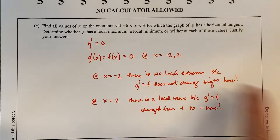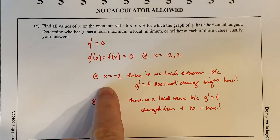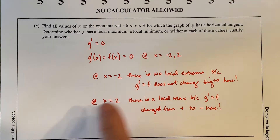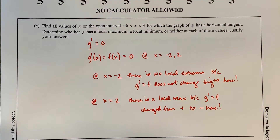At x = 2, the values of F went from plus to zero to minus — the derivative of G went plus, zero, minus. Because it went plus to minus, there is a local max at x = 2, because the derivative of G, which is F, changed from plus to minus there. Make sure you state these things clearly — never use pronouns. Say 'G prime' or 'F' explicitly.